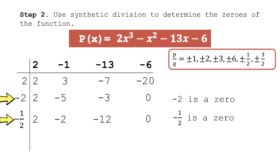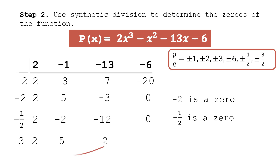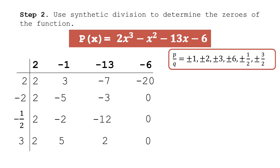Now that we have two negative zeros, let's test a positive value. Testing positive 3: bring down 2; 2×3=6, 6+(−1)=5; 5×3=15, 15+(−13)=2; 2×3=6, 6+(−6)=0. The remainder is 0, therefore 3 is a zero of the function. The zeros of our polynomial function are negative 2, negative 1/2, and positive 3.